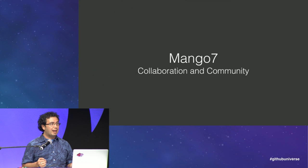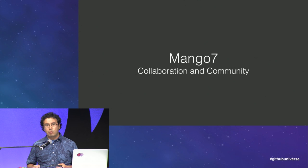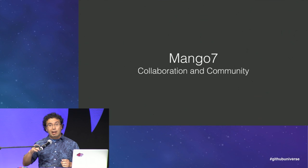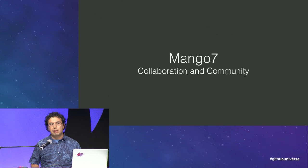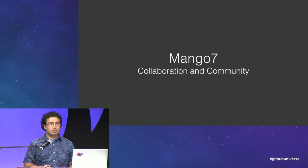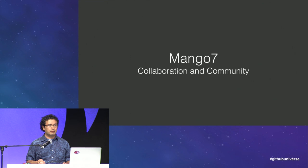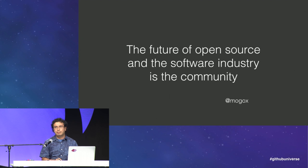That leads me to my last point: the biggest constraint open source has is time — time from maintainers, developers, and everyone else involved. The best tool we have to figure out big problems over a long period of time is collaboration. A healthy community promotes collaboration, and you are part of the community. Please consider helping an abandoned open source project. The future of open source and the software industry is the community. Thank you.